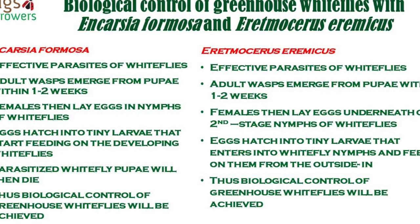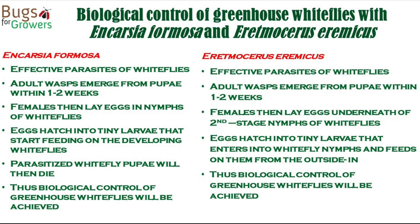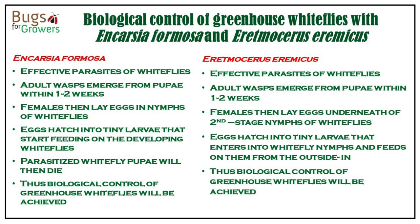So, how do parasitic wasps control greenhouse whiteflies? Adults of wasps will emerge from the released PP in the greenhouse and parasitize whiteflies by laying eggs underneath or inside the nymphs of whiteflies. The hatched larvae will then feed on the whitefly nymphs and kill them.